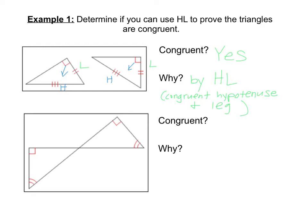For our second set of triangles, we once again have two right triangles. Notice they both have a 90 degree angle. We also have this pair of congruent angles. But we don't have any sides marked.